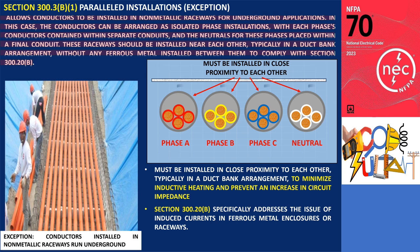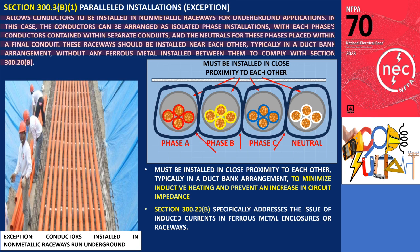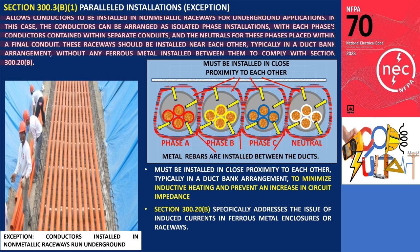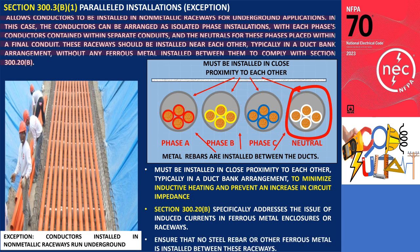When an alternating current conductor passes through ferrous metal, it generates an induced current that causes the surrounding metal to heat up. To avoid inductive heating, it is necessary to ensure that no metal is installed between the ducts.